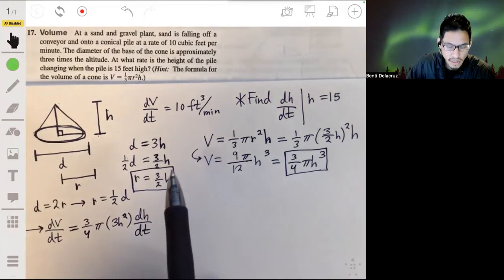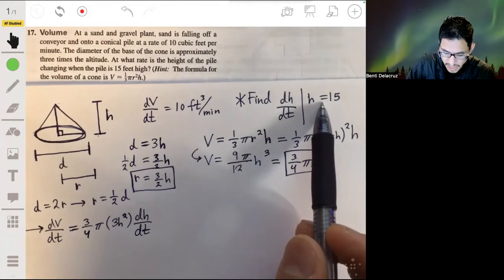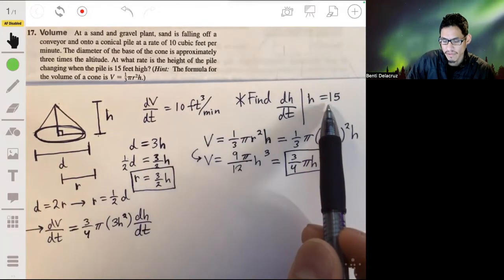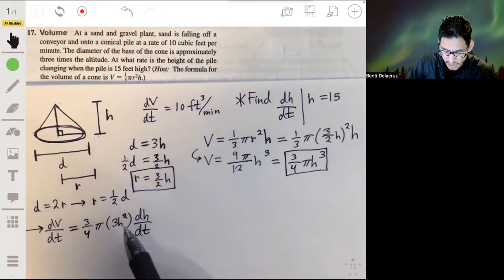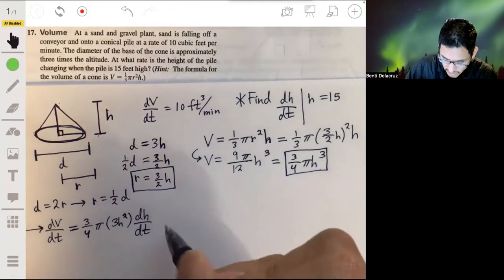So we already have h. I didn't see it there for a second, but this is great, we already have h, then we have dV/dt, so we can go ahead and just start solving this.